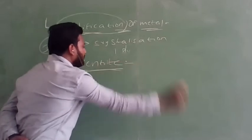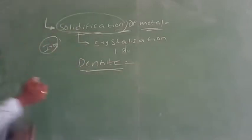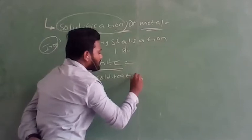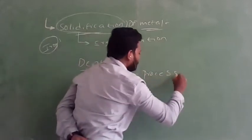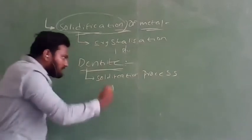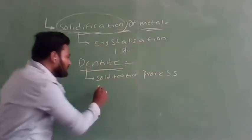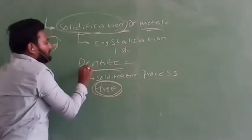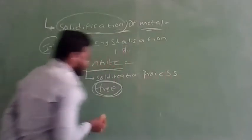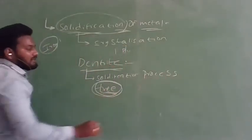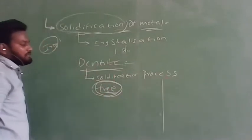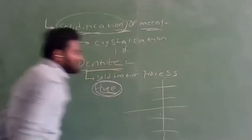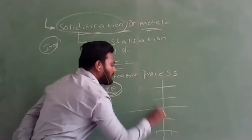Dendrite is the solidification process flow. Dendrite is nothing but the solidification process — it forms like a tree shape. The first step is the liquid state, then small grains are formed, and then the small grains form in the solid state.